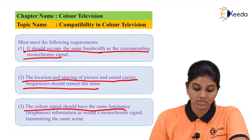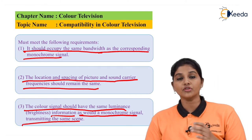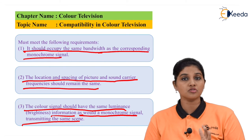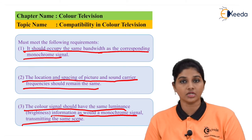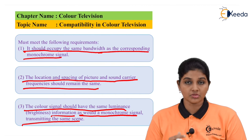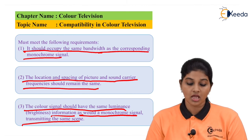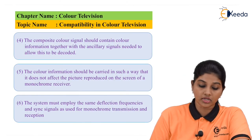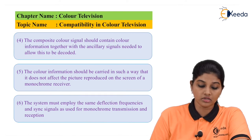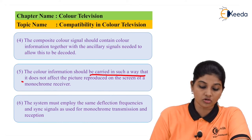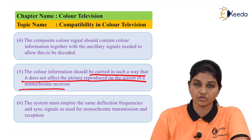The third parameter is that the color signal should have the same luminance, meaning the same brightness information, as would a monochrome signal transmitting the same scene. The luminance of white light is more as compared to the luminance of dark. Therefore, the color signal should contain the same luminance information as the monochrome signal. The next factor is that the composite color signal should contain color information together with the auxiliary signals needed for decoding.